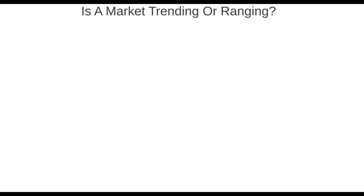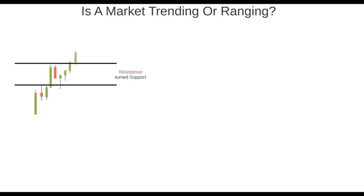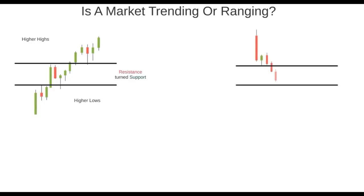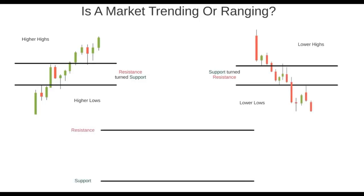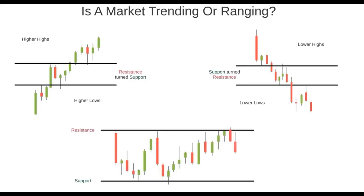Apart from identifying potential trade areas, support and resistance helps identify whether a market is ranging or trending. If price is making higher highs and higher lows by breaking resistance levels and using them as support, the market is trending upwards. If it's making lower lows and lower highs by breaking support and using it as resistance, it's trending downwards. If the market is moving sideways between two levels, it is ranging. Some traders only employ a strategy if the market is trending or ranging, so this analysis helps them decide whether to implement a particular strategy.